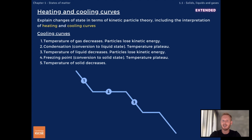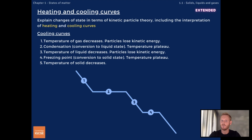Next, the temperature of the liquid decreases until it reaches zero degrees — the freezing point of water. Then we have another plateau, showing that the temperature doesn't change again until all the water has turned into ice. Particles stop losing energy as the forces of attraction needed to hold them in position in a solid form between them. Finally, when all the liquid has frozen, the temperature of the ice decreases.